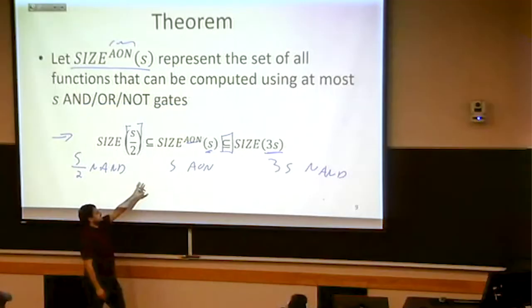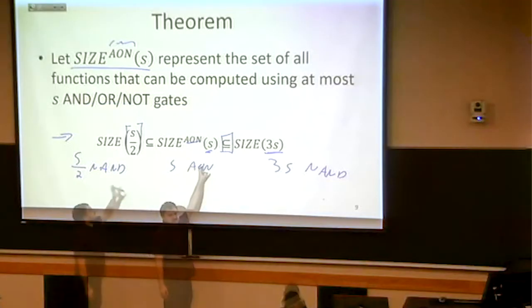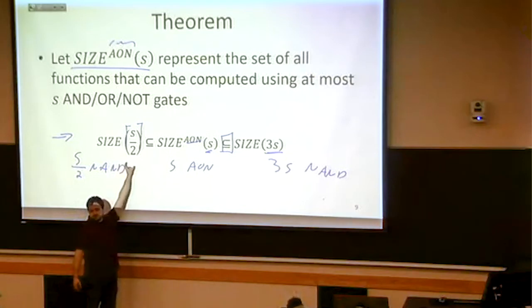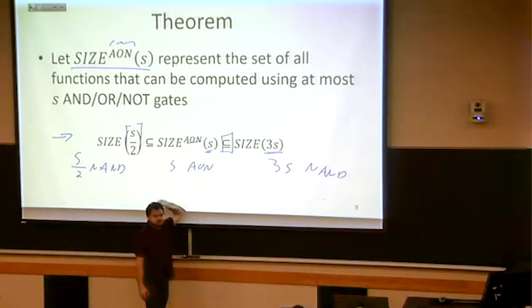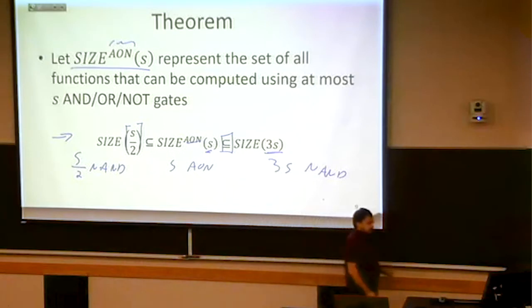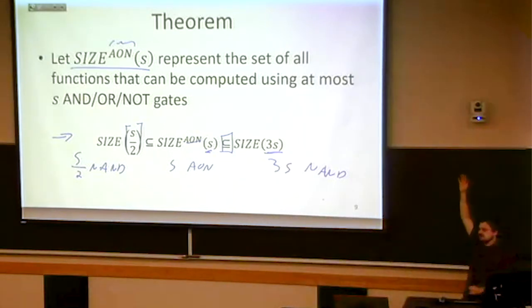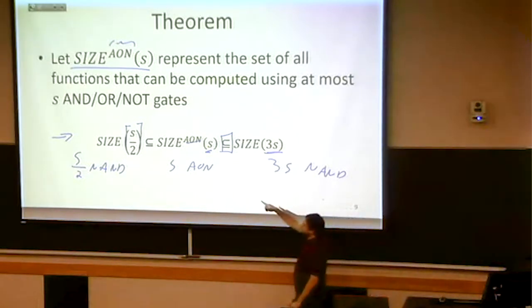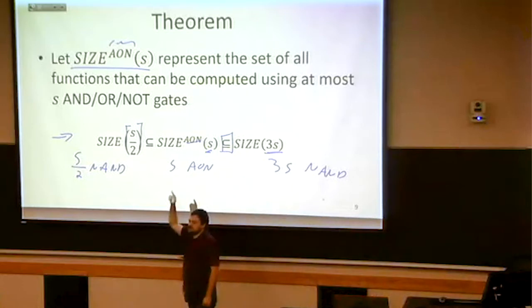I should have had ceiling. If you can demonstrate how it is that anything I can implement in S over two NAND gates, I can also implement in S AND or NOT gates. So why is this the case? Why is it that anything I can do in S over two NAND gates, I can do with S AND or NOT gates?